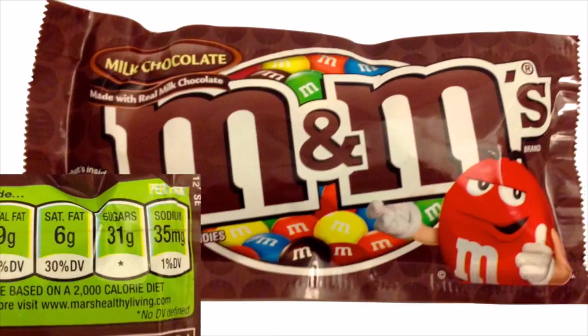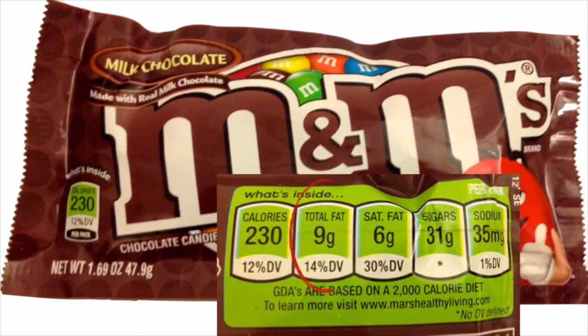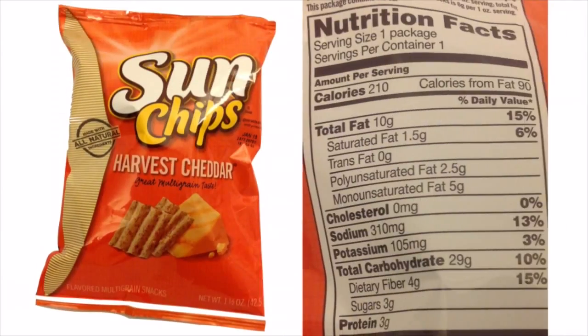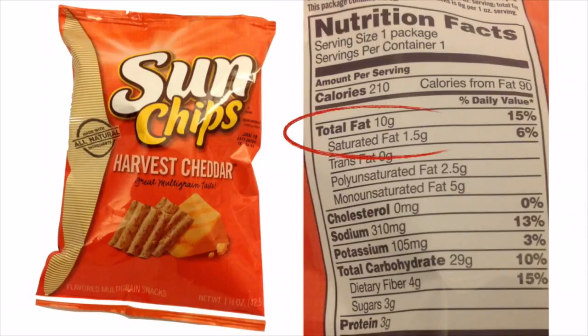These M&Ms contain 9 grams of fat out of 50 grams, so their fat content is 18%. This single serving package of chips, 42.5 grams, contains 10 grams of fat. Their fat content is thus 24%.